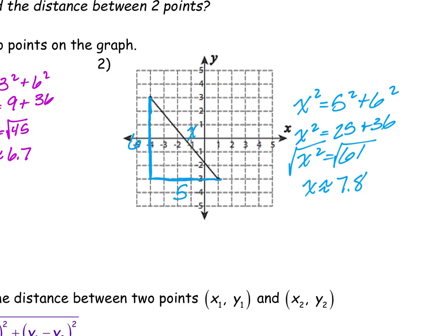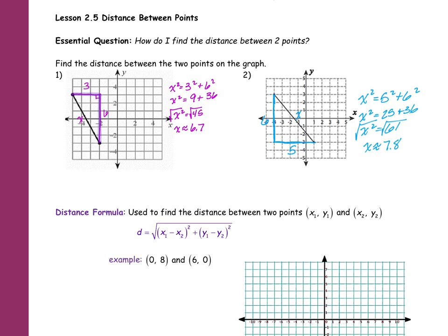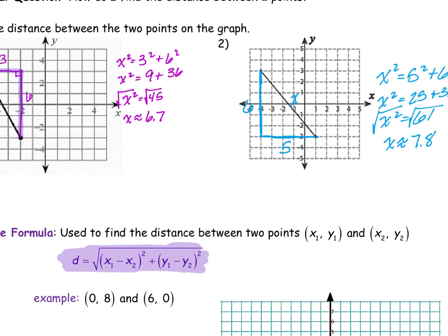So what we basically did was the distance formula — not the quadratic formula, the distance formula. This looks really ugly, right? But you guys just did it twice. What this says: I take my X's and subtract them. So I have my two points — this point is (1, -3) and this point up here is (-4, 3). So I take my X's and subtract them: 1 minus negative 4.